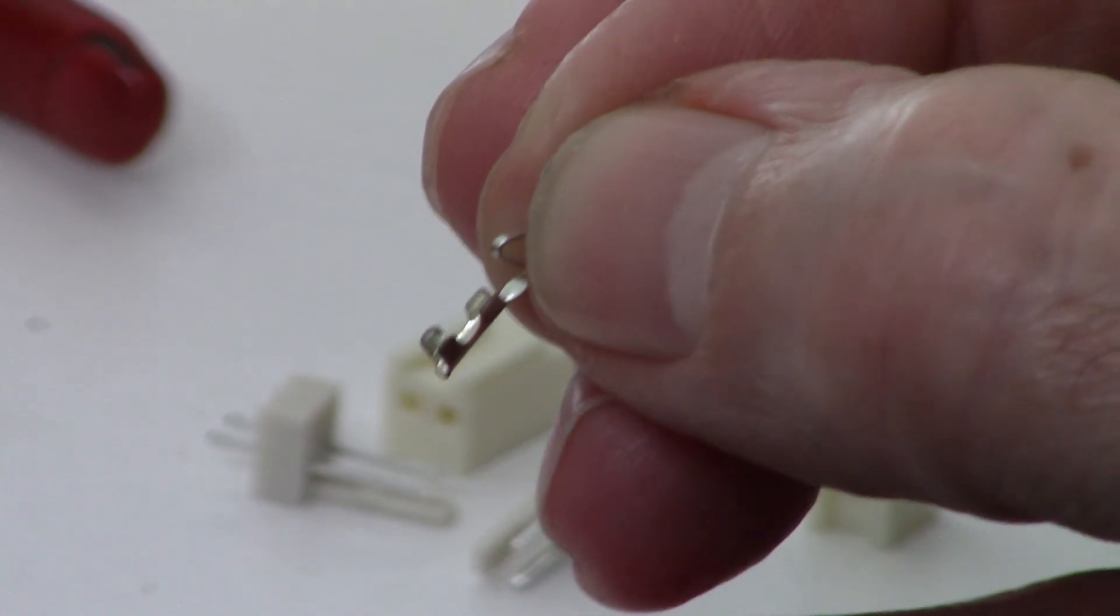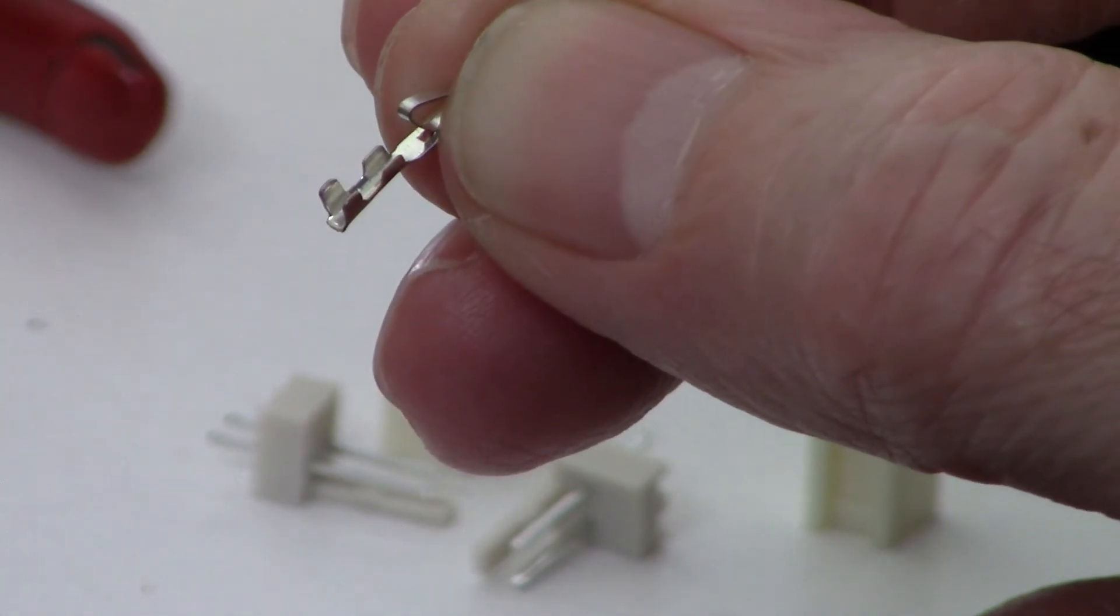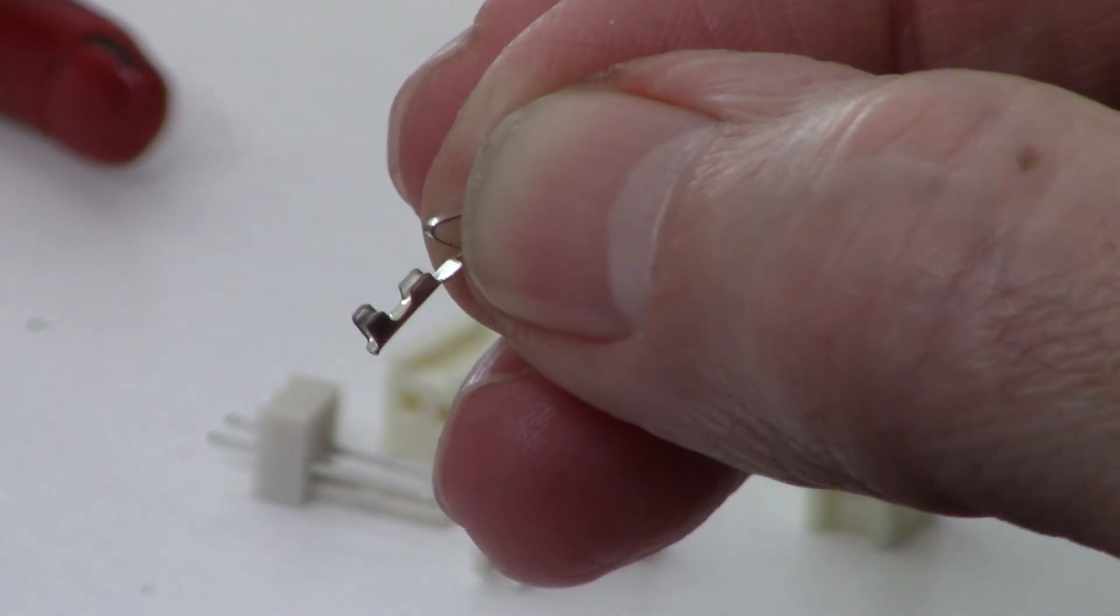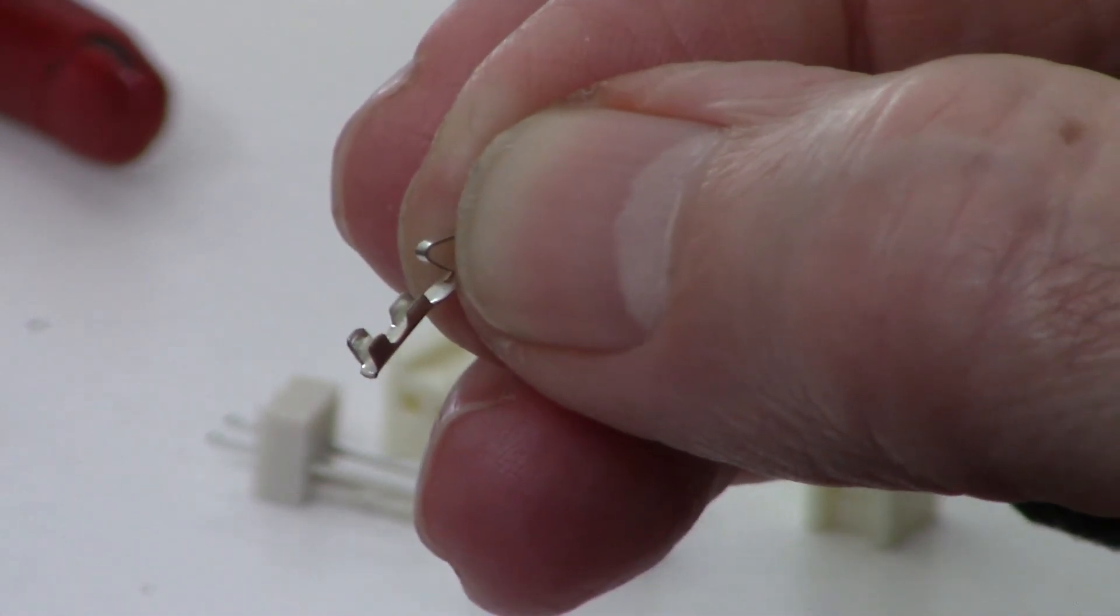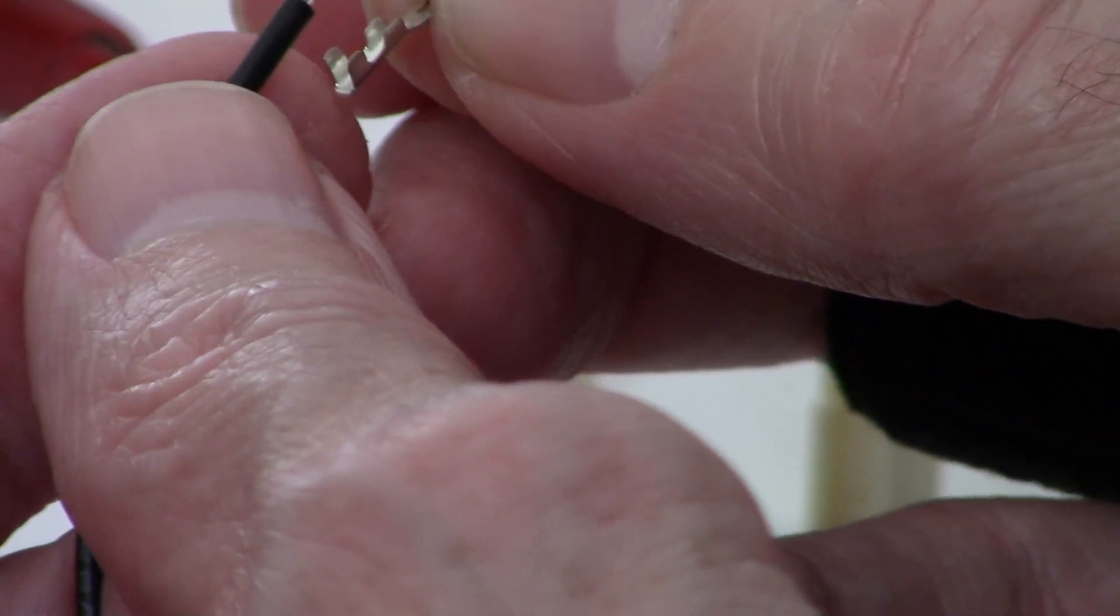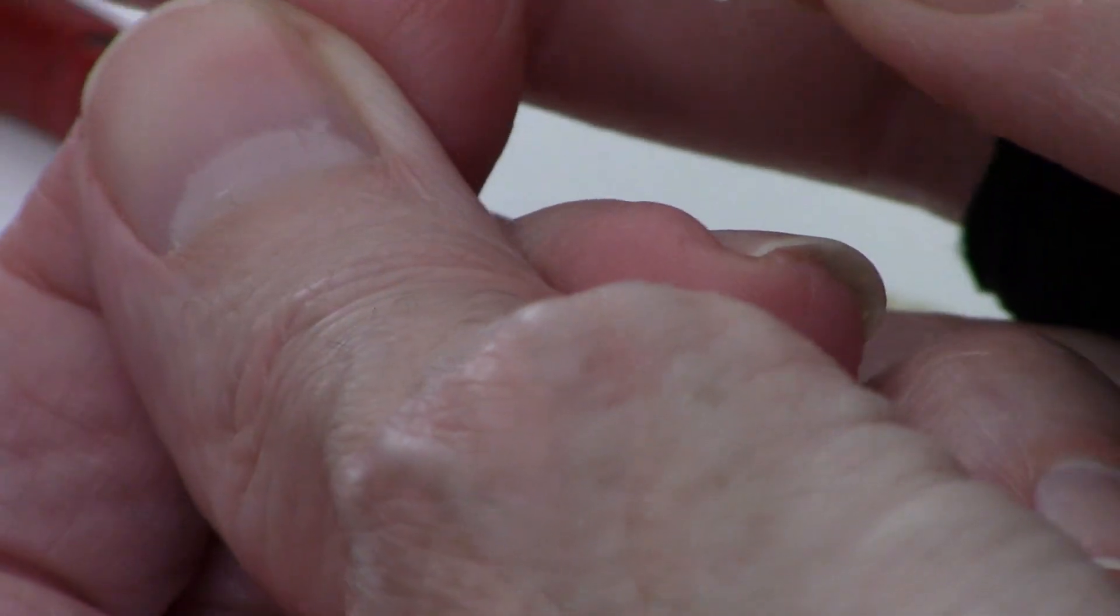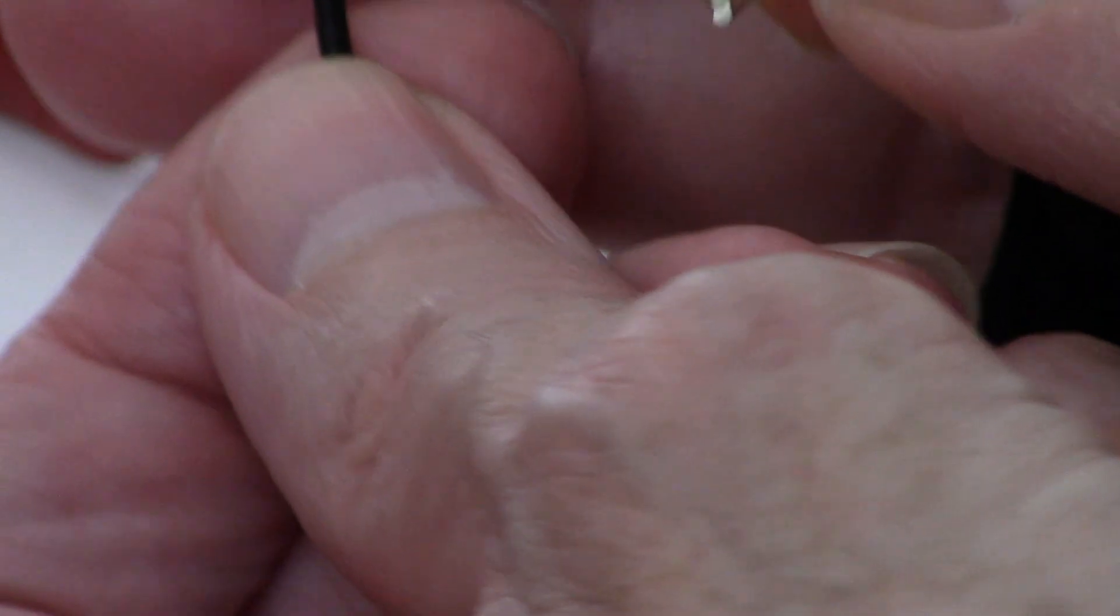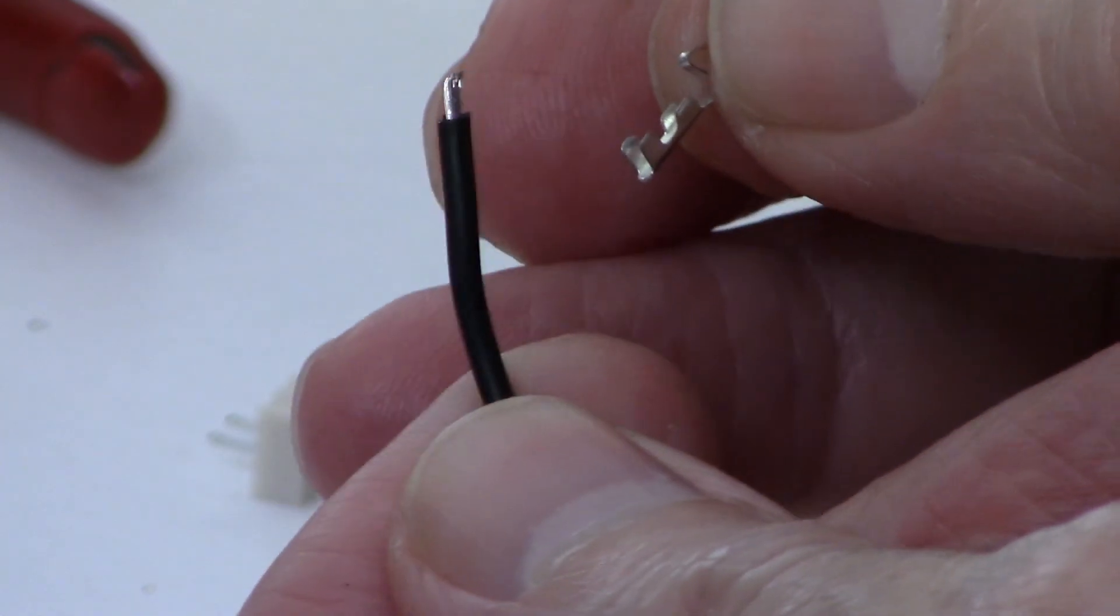And you can see, scale to size, these things are quite small. First thing to do, I like to use 22 gauge AWG wire for making these crimps and making jumpers. So I've already stripped the end of the wire there. You can see how much I've stripped it.